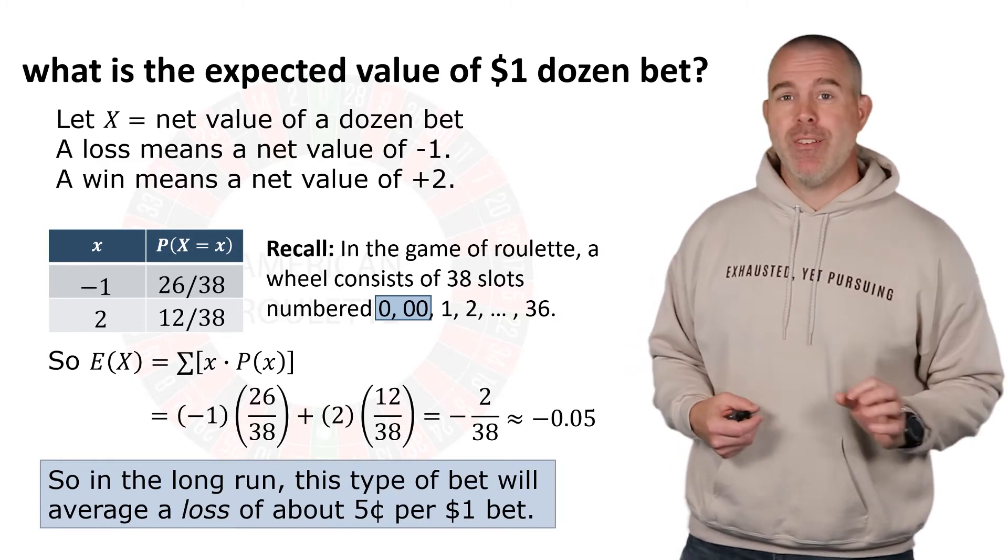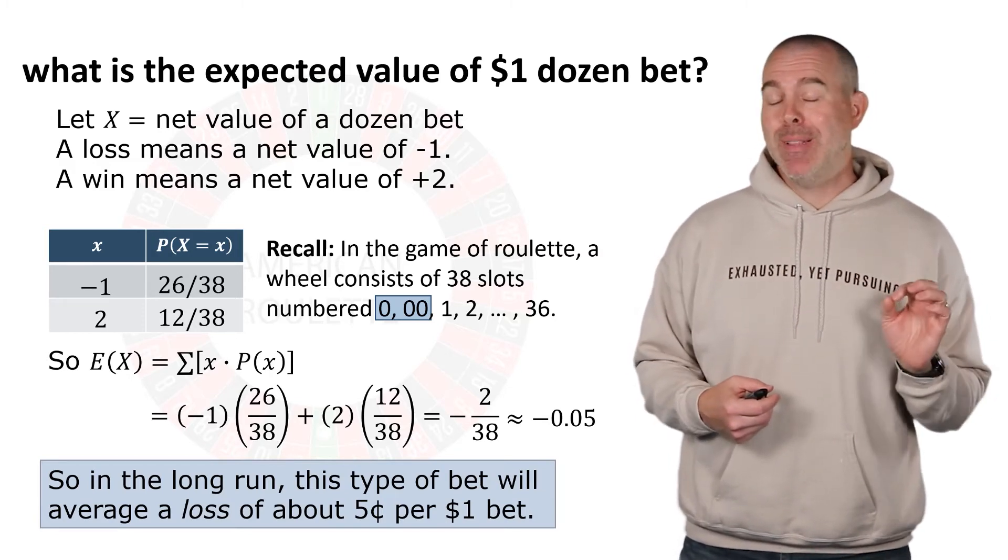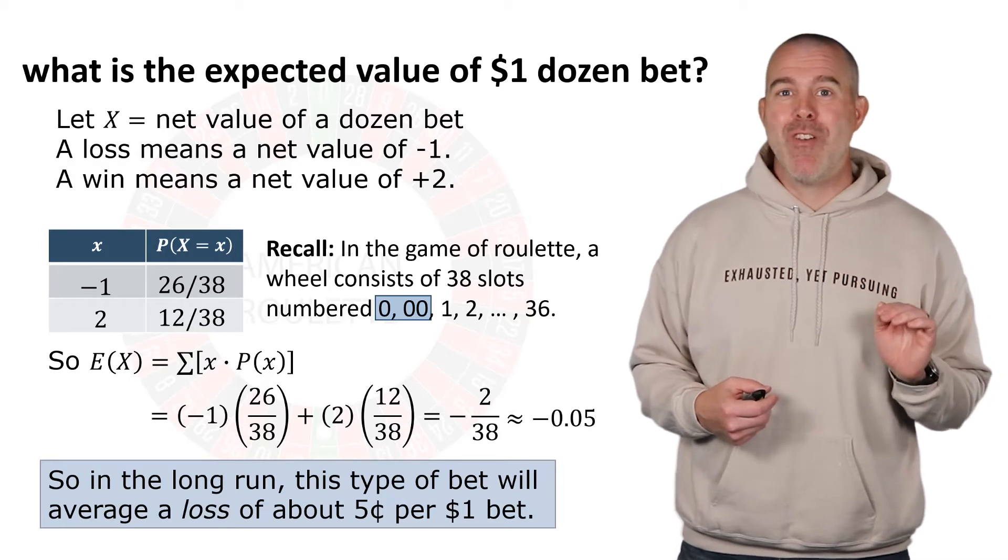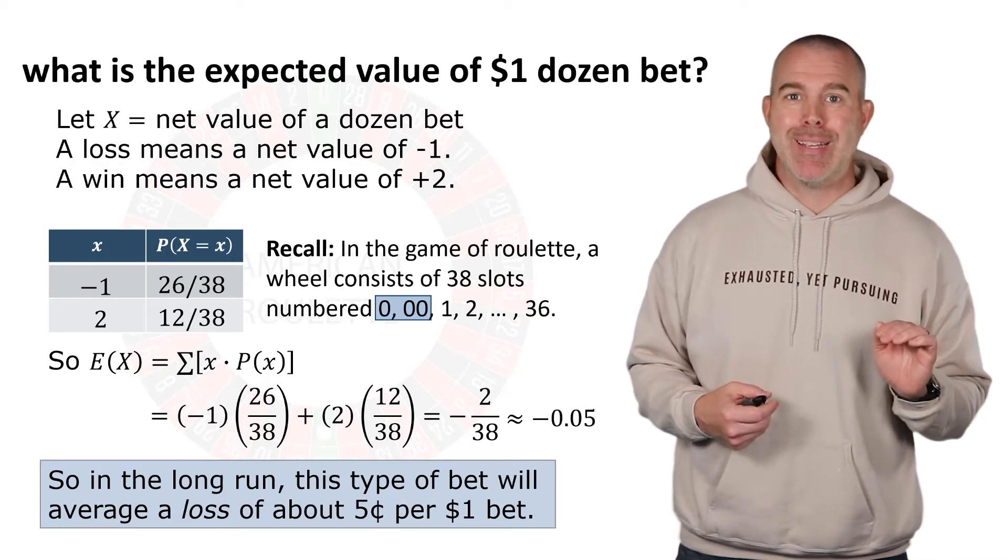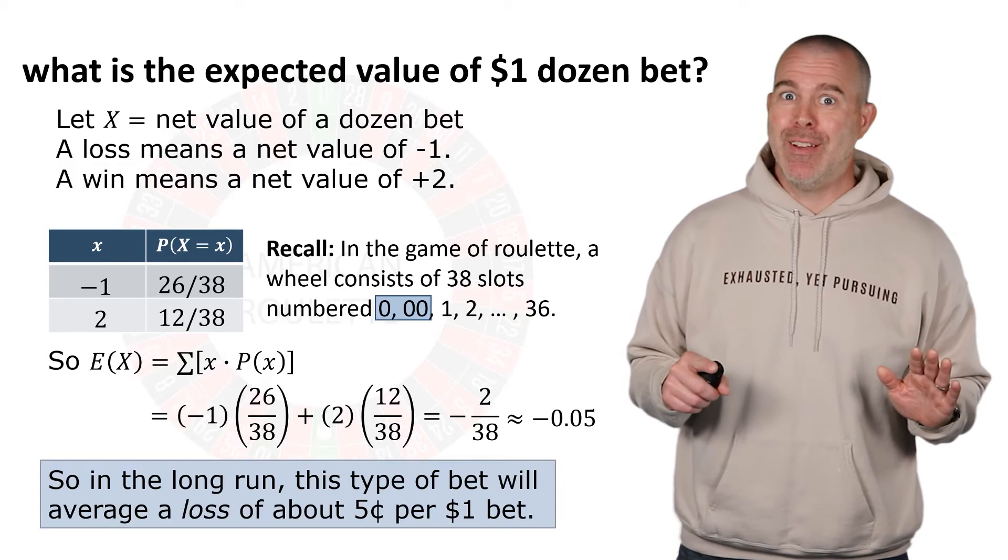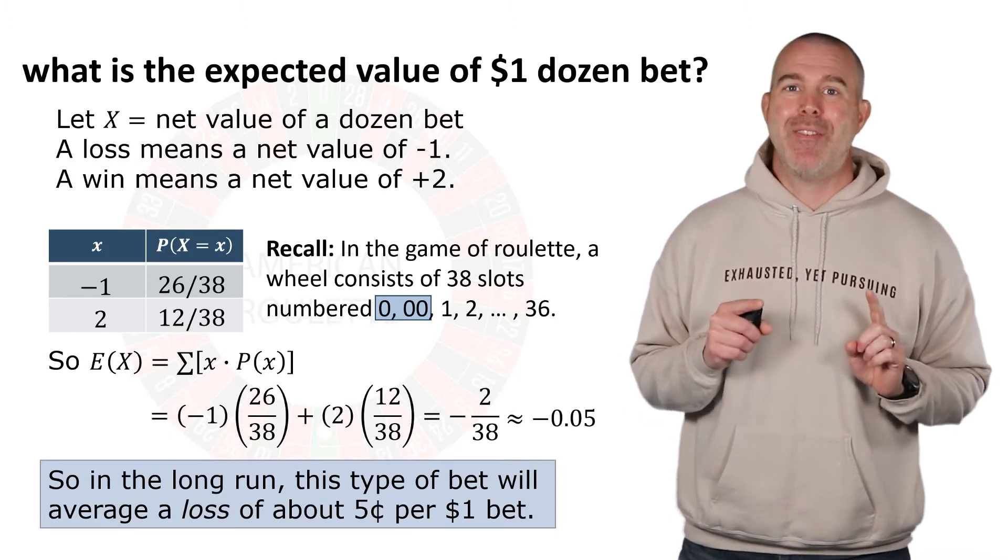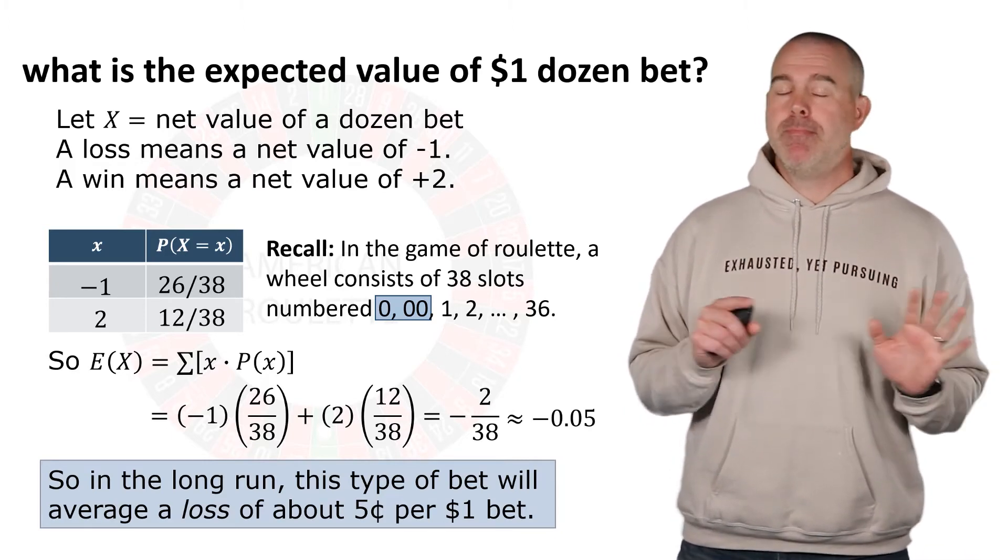Incidentally, this expected value for roulette, I believe it's the same expected value for every possible bet. They're certainly all negative, and I believe they're all negative five cents. So don't play with that.